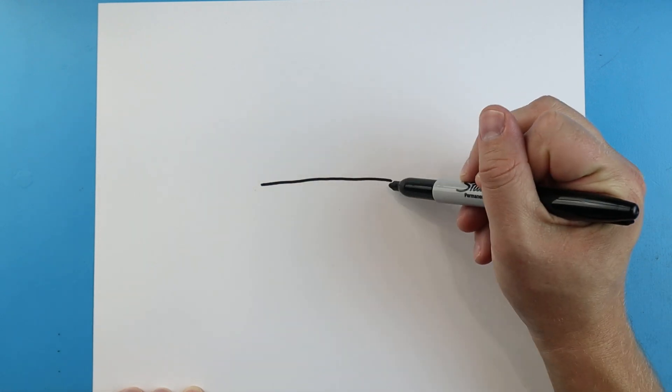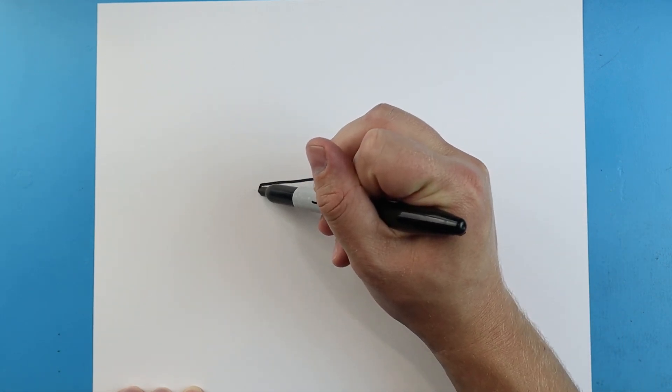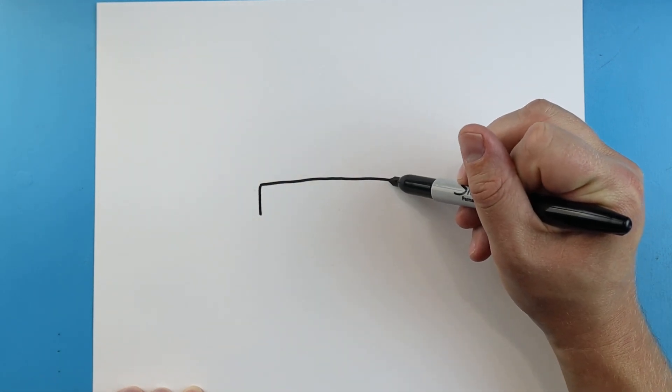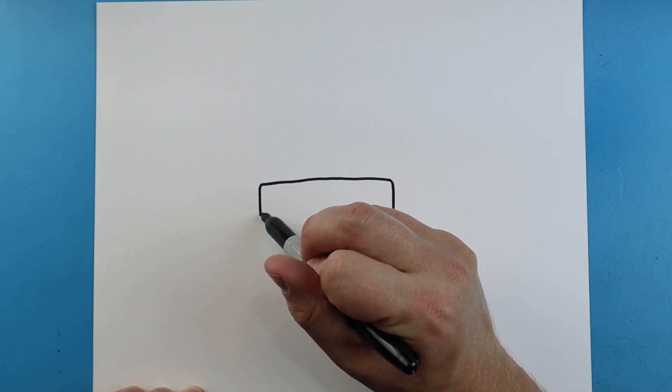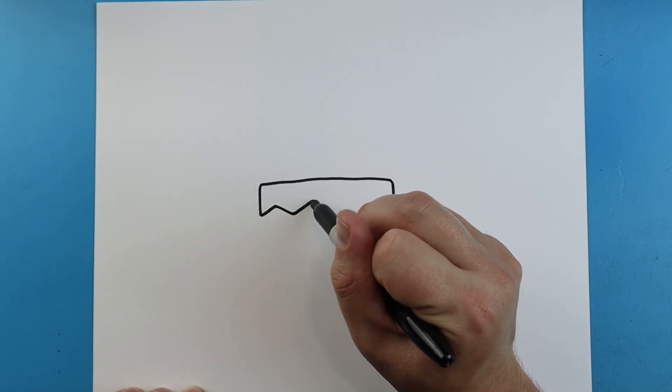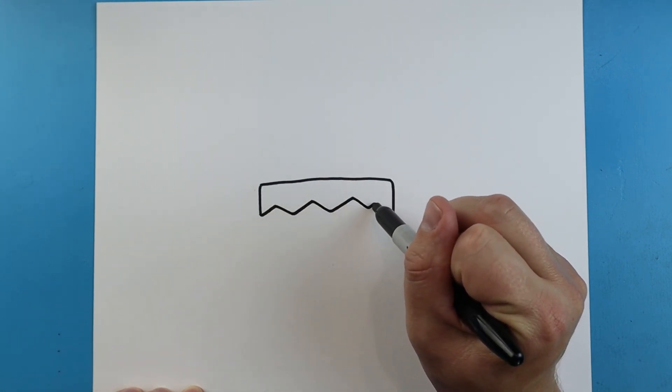Now after we have this we're going to make two lines that come down on each side. So we will make a line that comes down here and a line that comes down here. Once we've done that, let's make a little zigzag line that comes right across here.